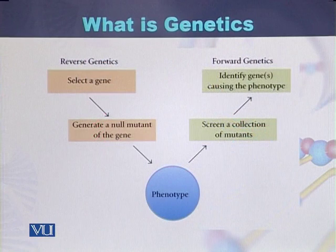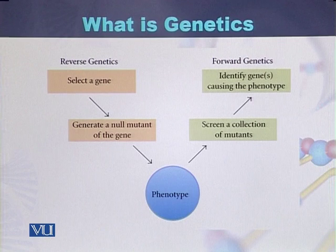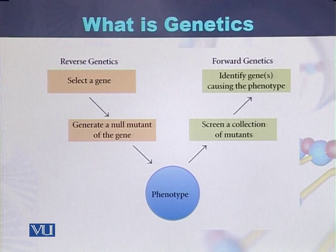Genetics can be studied in two different ways. One way is called reverse genetics, while the second method is called forward genetics.